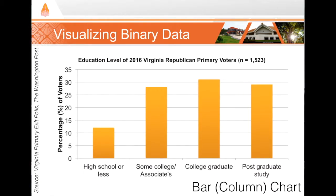Our next choice is a bar chart. Bar charts are good for maybe three to five choices or response options. They're also more appropriate when the proportions are relatively similar, as they are in this example from a poll of Virginia voters. Notice that there's space between the bars, which is different from a histogram.